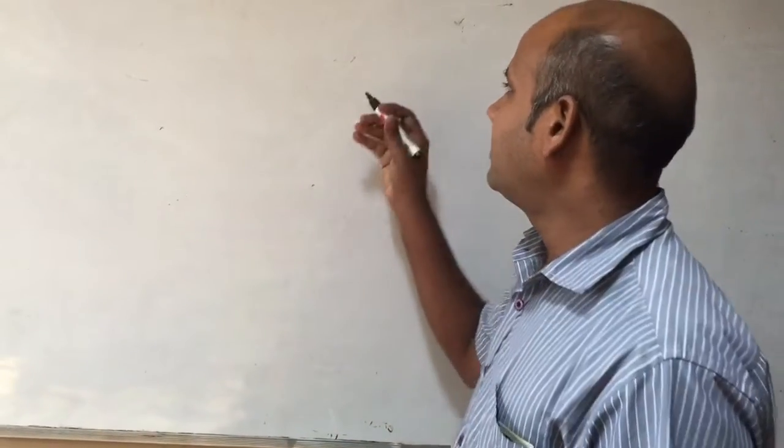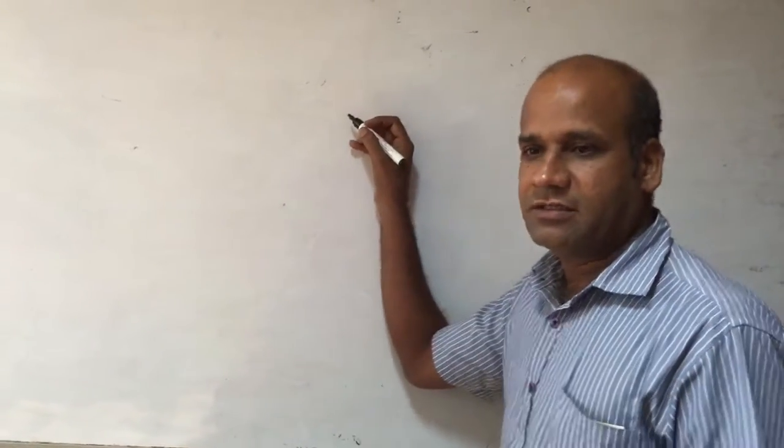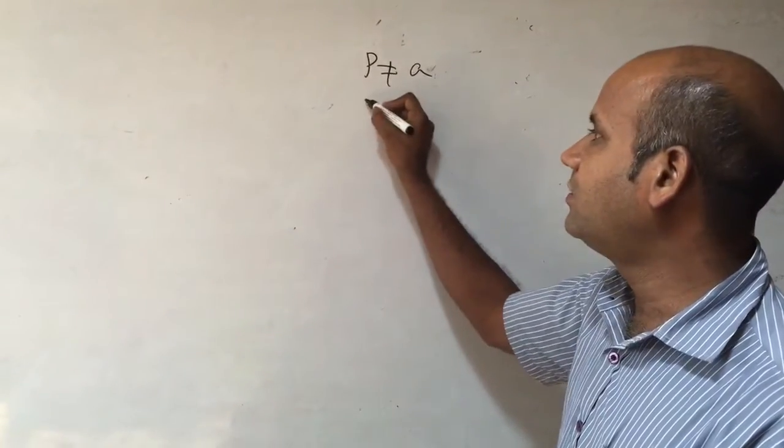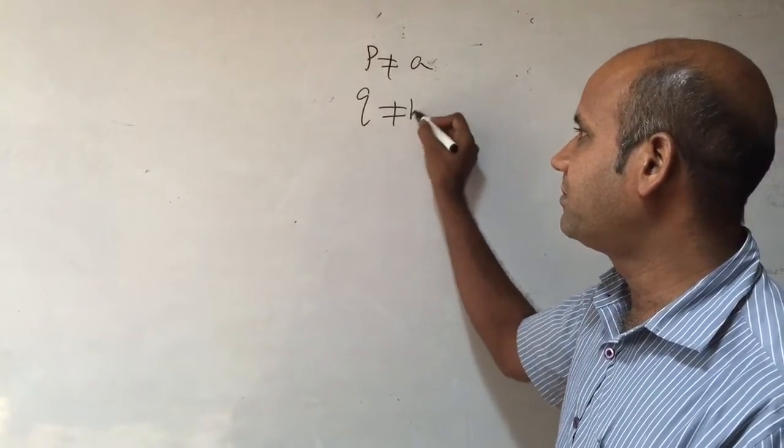The problem was given like this: P is not equal to A, Q is not equal to B, and R is not equal to C.